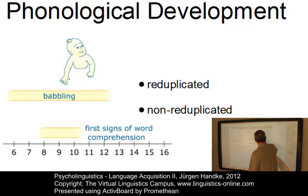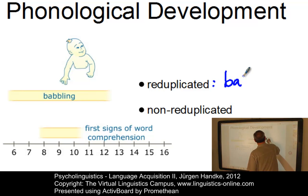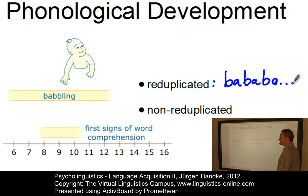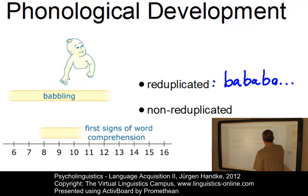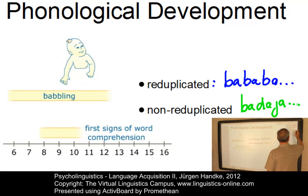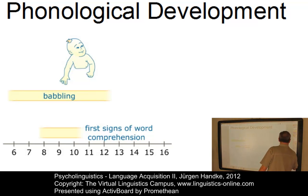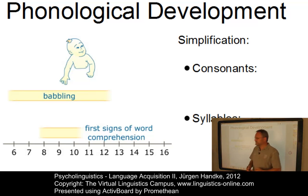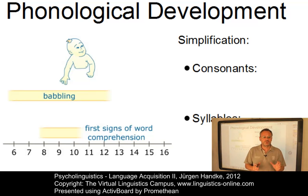Reduplicated babbling examples would be something like 'ba, ba, ba' where the same syllable is repeated several times. And non-reduplicated babbling would be examples of the type 'ba, da, ga' or 'ba, do, ga' and similar syllable combinations. Later on, young children simplify their language and the words they produce, with a general tendency to produce shorter strings. This simplification occurs in all languages.